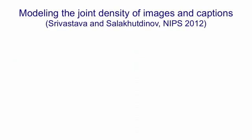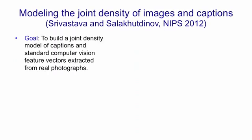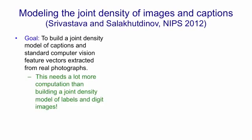I'm now going to describe some work by Nitish Srivastava, who's one of the TAs for this course, and Ruslan Salakhutdinov, that will appear shortly. The goal is to build a joint density model of captions and of images, except that the images are represented by the features standardly used in computer vision, rather than by the raw pixels. This needs a lot more computation than building a joint density model of labels and digit images, which is what we saw earlier in the course.